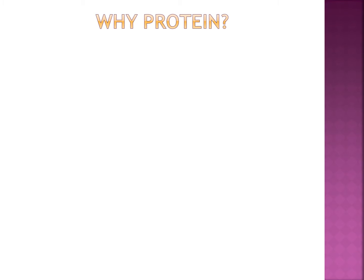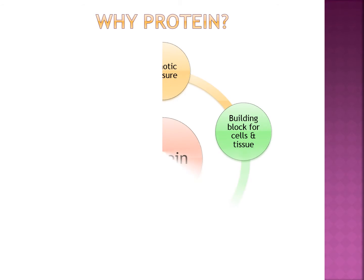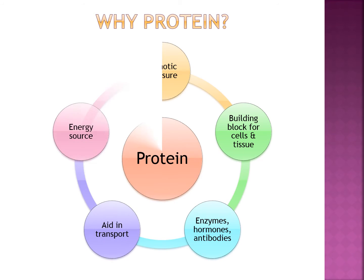So why protein? Let's talk about our analyte and why it's so important. Firstly, proteins are the most abundant product in blood serum apart from the formed elements. They are the product of multiple amino acids coming together and are the building blocks for cells, tissues, hormones, and enzymes. Proteins also serve as an energy reserve for the body.